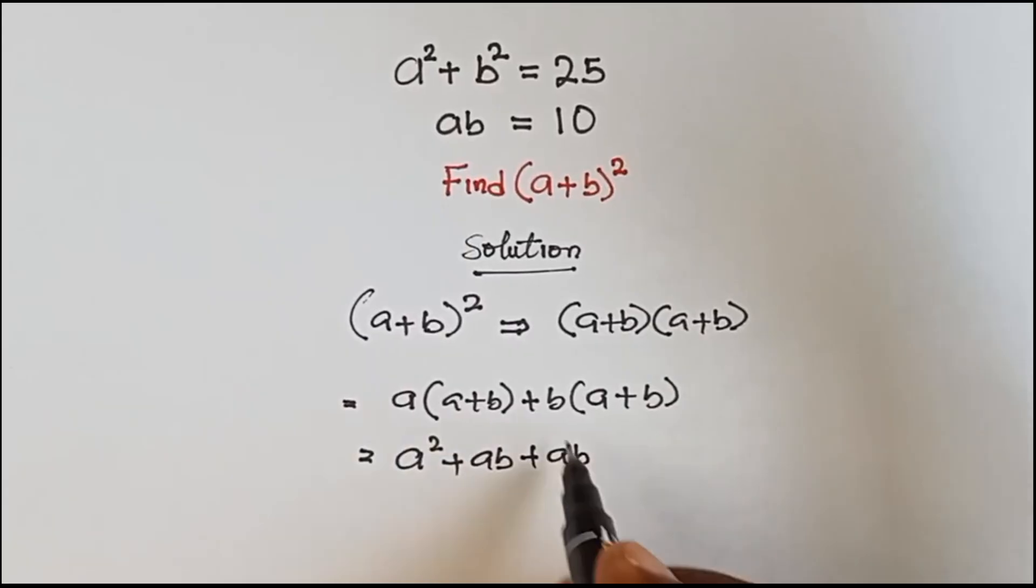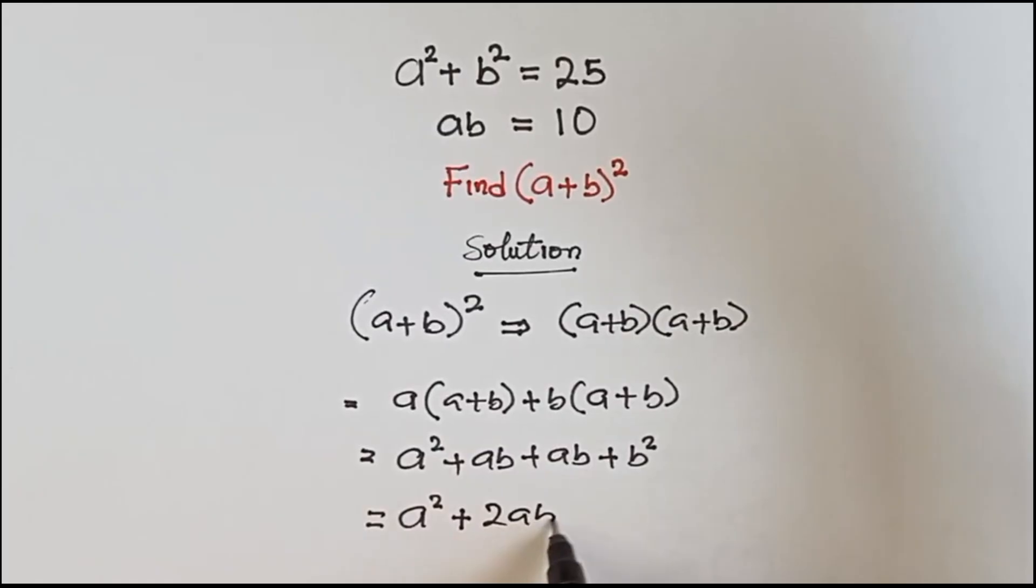b times a is ab and b times b is b². Now these are like terms, ab and ab. ab plus ab will give 2ab plus b².